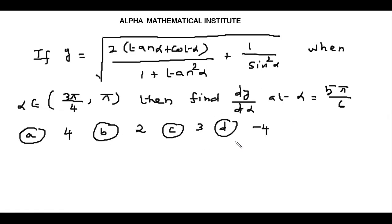In this problem, y is given as one function where α is the variable. The variable α is defined on the open interval (3π/4, π). We need to differentiate the function with respect to α and calculate the value at α = 5π/6. Let's solve the problem now. We have y expressed in terms of α.